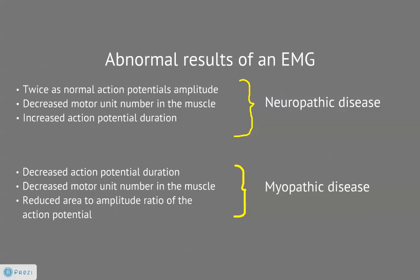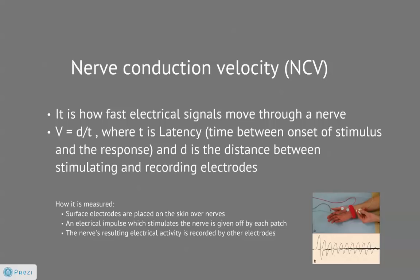Most of the time, nerve conduction testing is also done alongside an EMG to diagnose neurological diseases. The nerve conduction velocity, NCV, measures how fast electrical signals move through a nerve from the stimulating to the recording electrode. Several flat metal disc electrodes are attached to the skin with tape. A shock-emitting electrode is placed over the nerve and a recording electrode is placed over the muscles controlled by that nerve. The speed of the response can be found using the equation V equals D over T, where T is the latency — the time between onset of stimulus and the response — and D is the distance between the stimulating and recording electrodes.